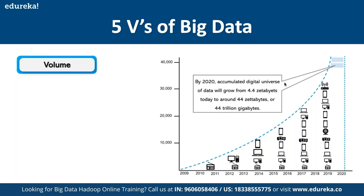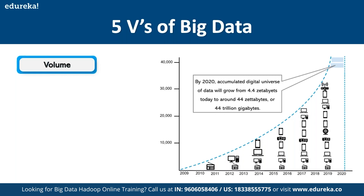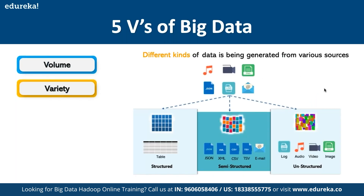This has been exponential growth in the amount of data being generated per month, largely thanks to the 4G revolution which happened back in 2016. The second V is Variety. Variety means data coming in different formats — we have structured databases, semi-structured data, and unstructured data sets.